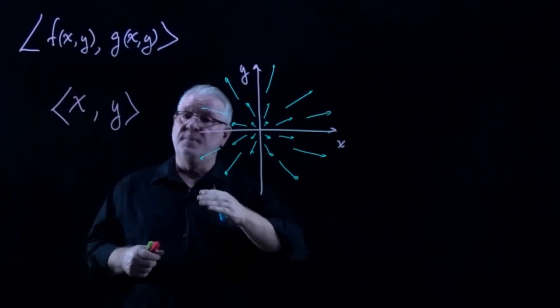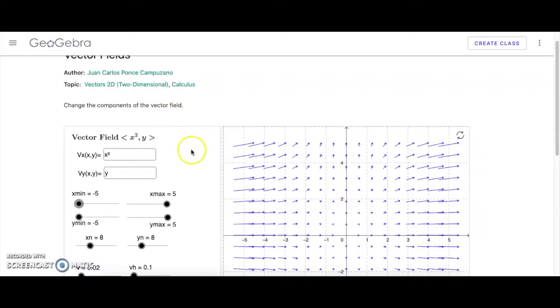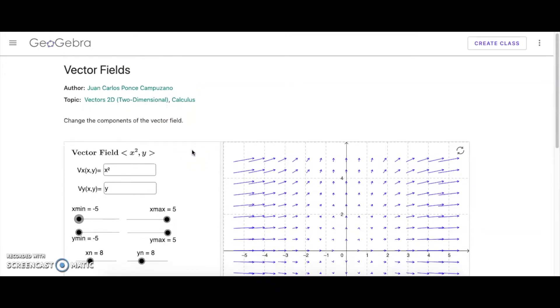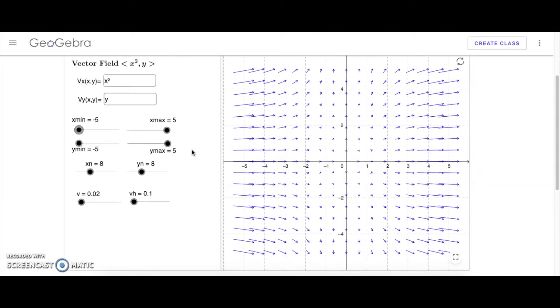Instead, we're going to immediately revert to some technological solution. Okay, the first method in order to sketch these vector fields is provided by this GeoGebra app. And this one's already been pre-programmed for us. I'll link the URL to it both in the video description as well as on the course home page.